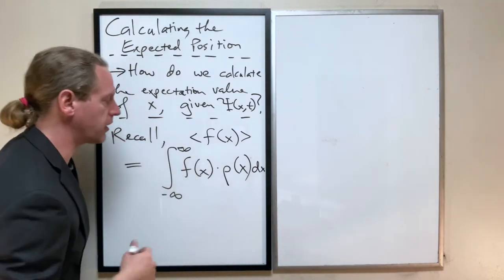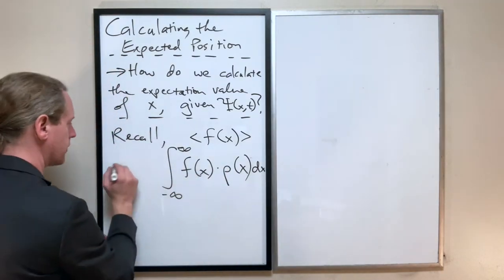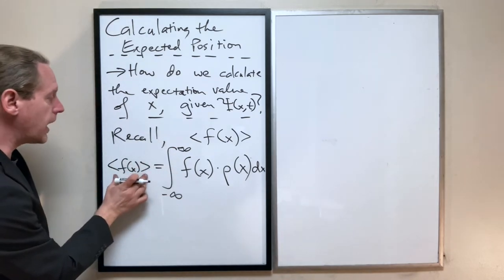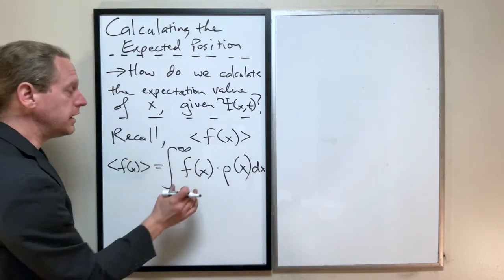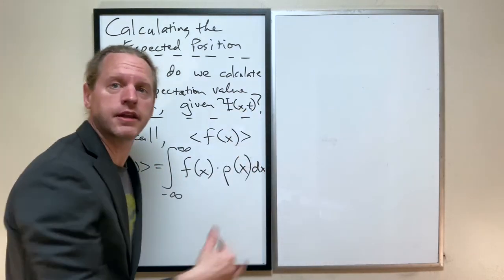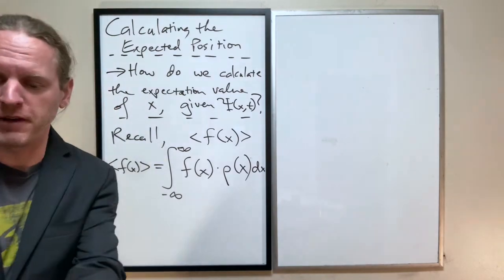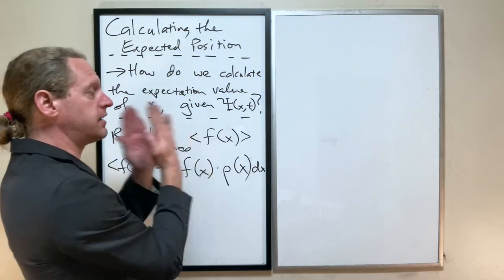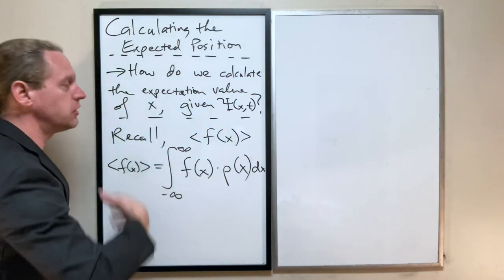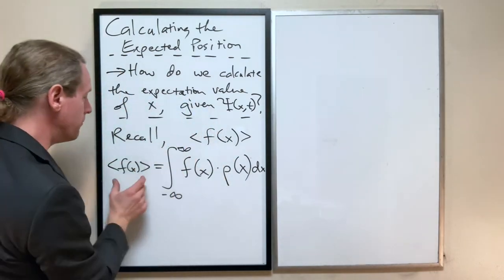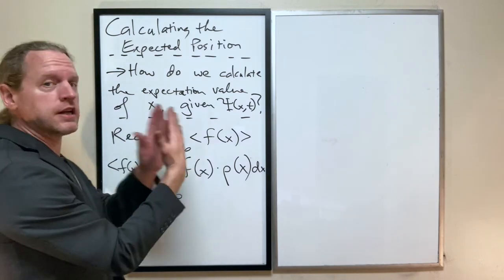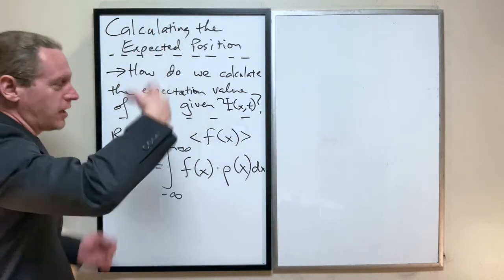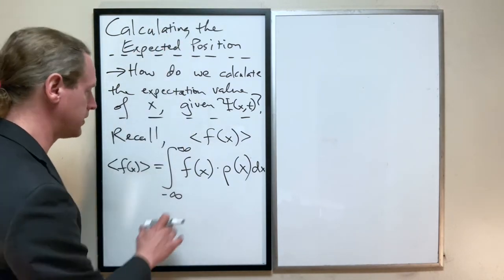Now this was from the last lecture. So the most likely value of that function is going to be given by taking that function and weighting it by how likely it is. So if there's a function that depends on x, but the probability distribution is very tightly peaked at a certain position, you know that the most likely value of that function is whatever it is at that point. I hope that makes sense there.